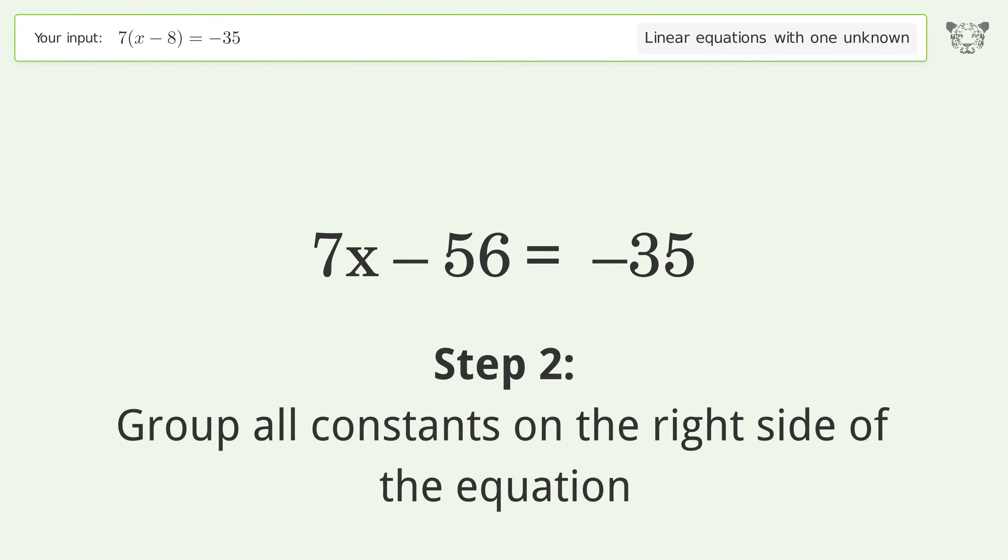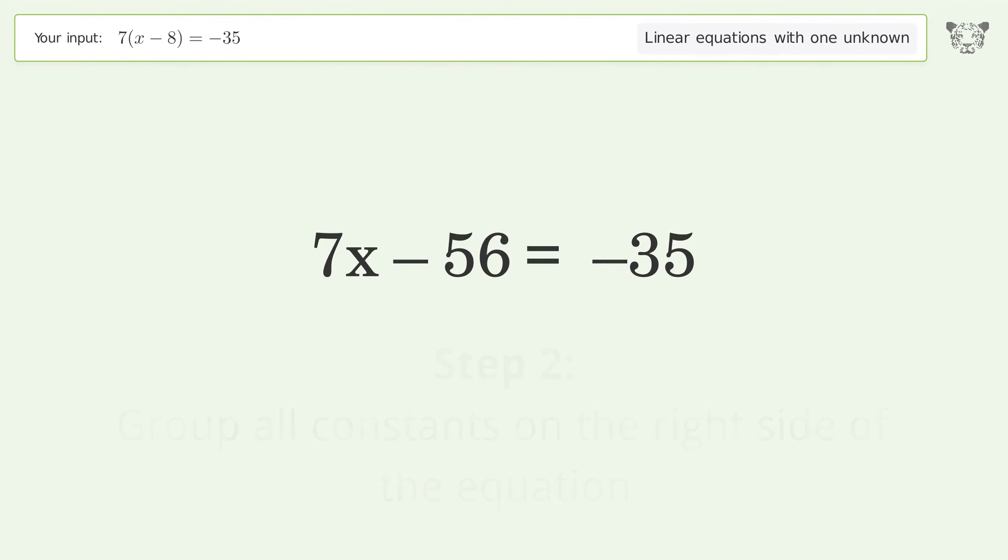Group all constants on the right side of the equation. Add 56 to both sides. Simplify the arithmetic.